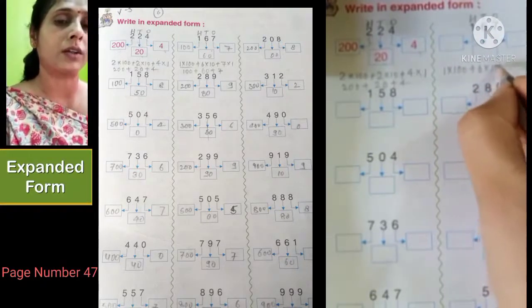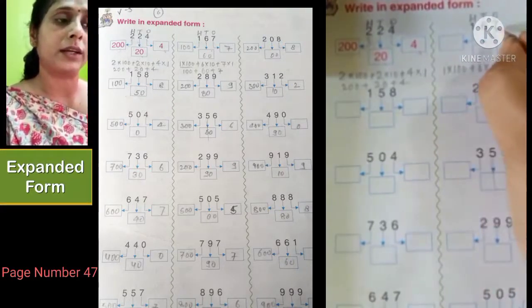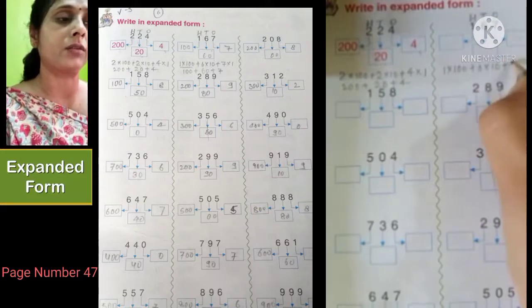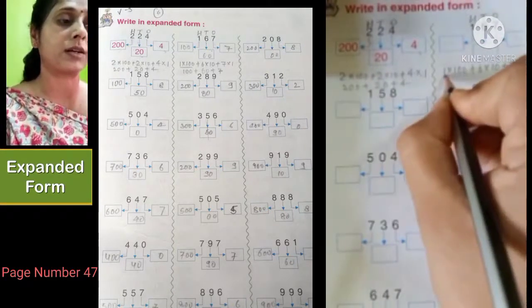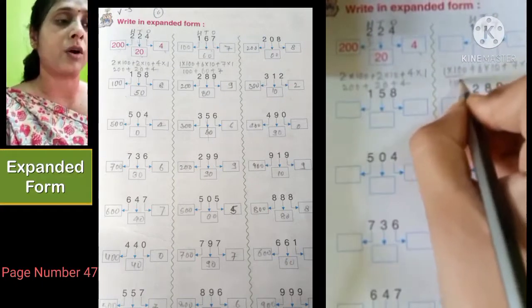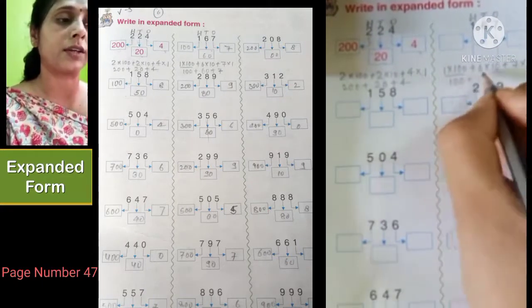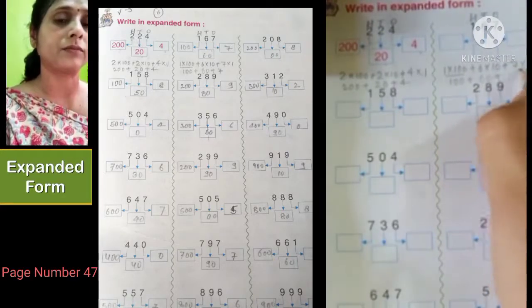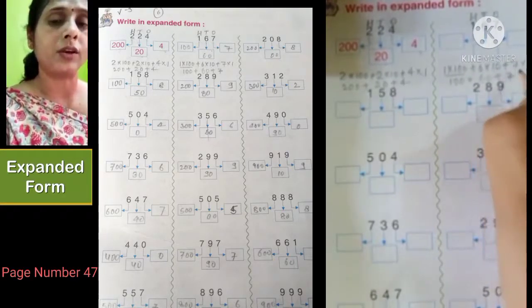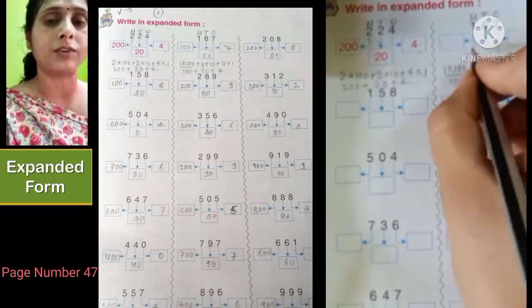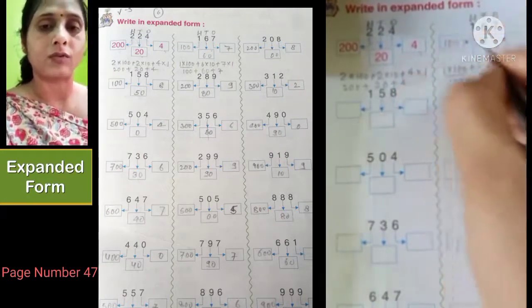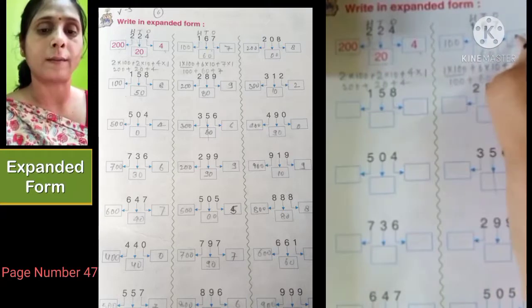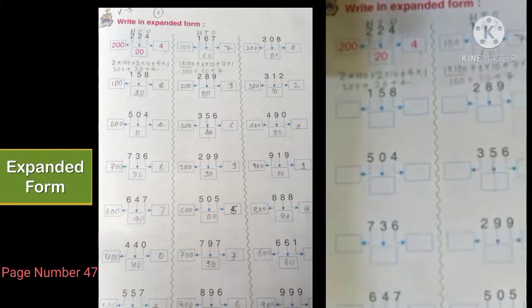At the place of ones, 7 is given, so we will multiply 7 with 1. 1 multiply with 100 is equal to 100, plus 6 multiply with 10 is equal to 60, plus 7 multiply with 1 is equal to 7. So the expanded form of 167 is 100 plus 60 plus 7. This is how we can expand our three digit numbers.